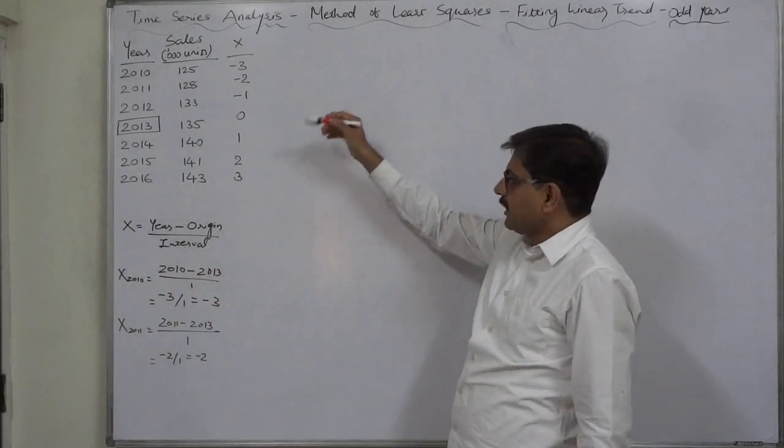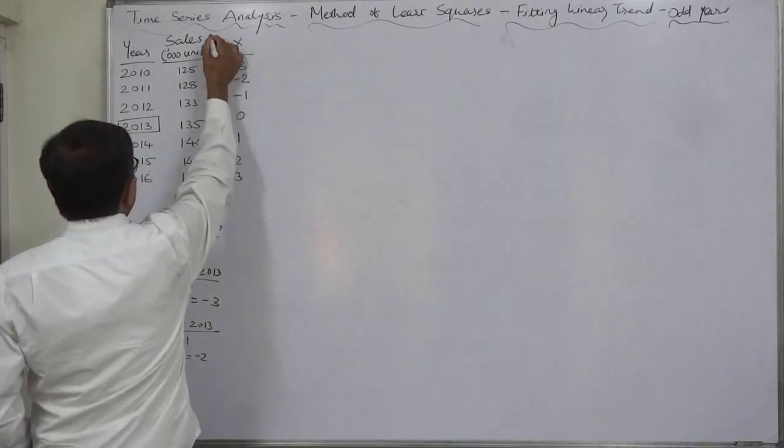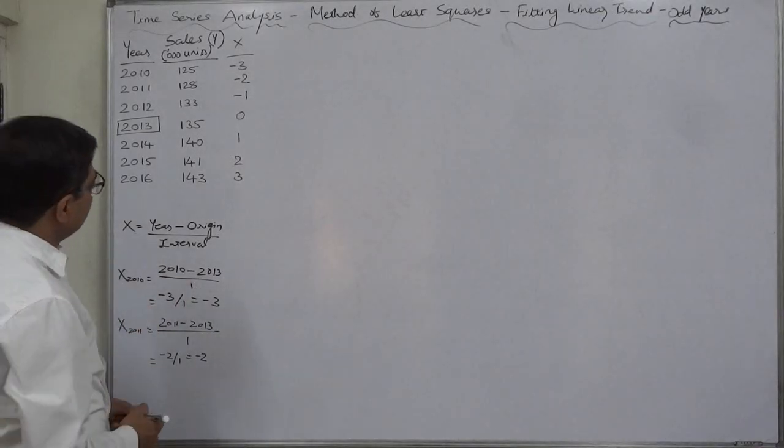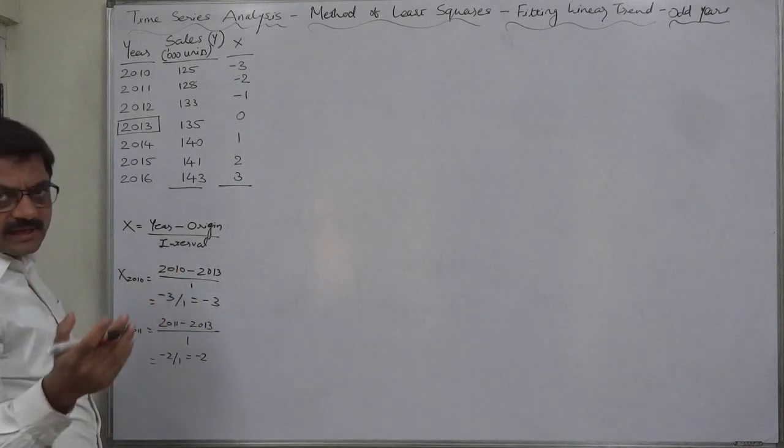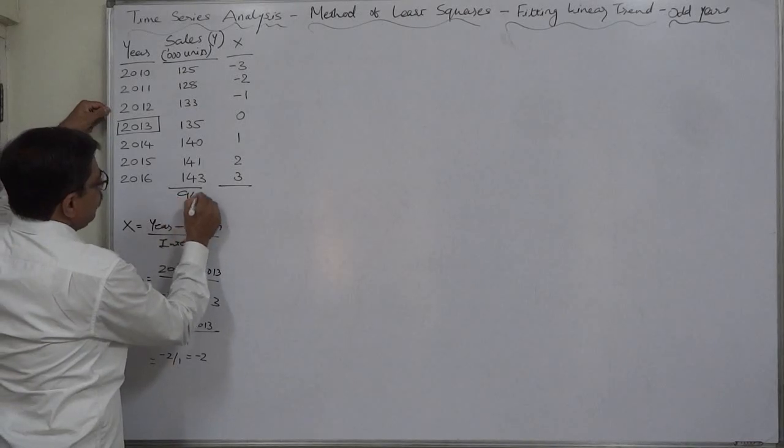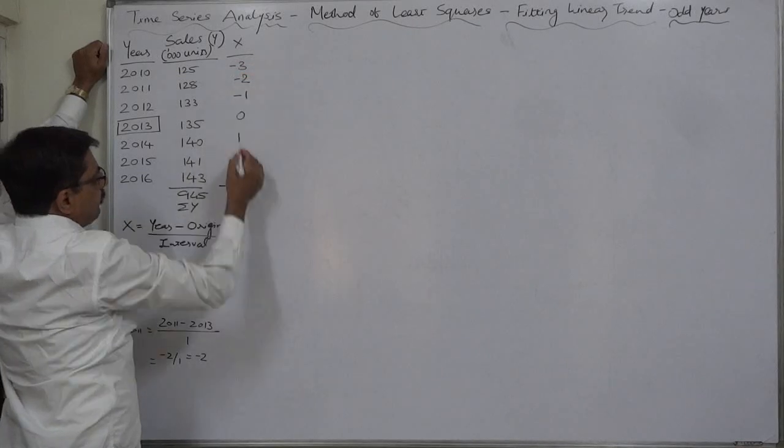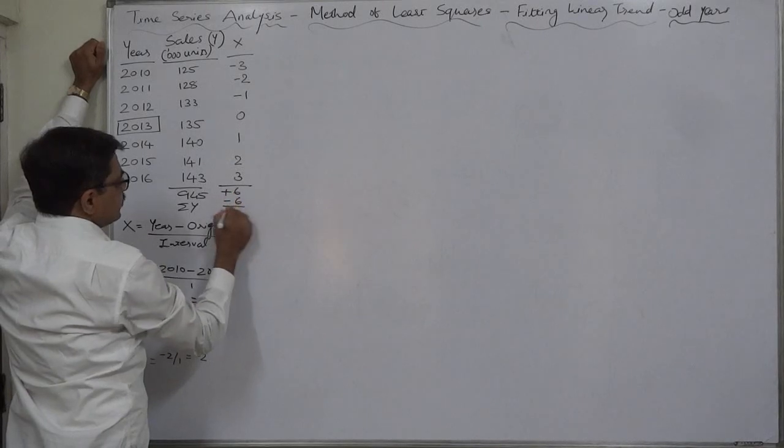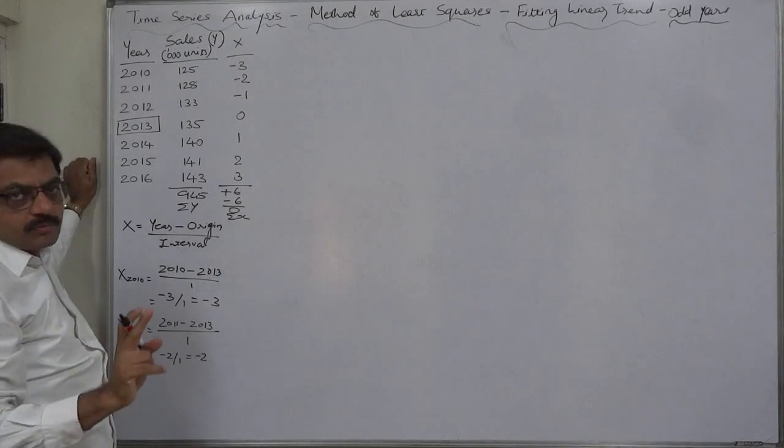Now we have X. What is Y? Y is always dependent variable. In our case, sales. This becomes Y. First of all we are going to prepare some other columns to get the summations of all these. Summation of Y is 945. This must be 0: minus 3 minus 2 minus 1 plus 3 plus 2 plus 1, so it is plus 6 minus 6, 0. Sigma X.